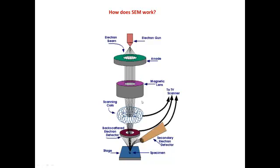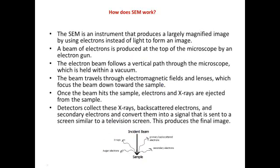The beam travels through the electromagnetic lenses and the electromagnetic field, which helps focus the beam down towards the sample. Once the beam hits the sample, electrons and x-rays are ejected from the sample and they are detected by the help of detectors, as you can see here.